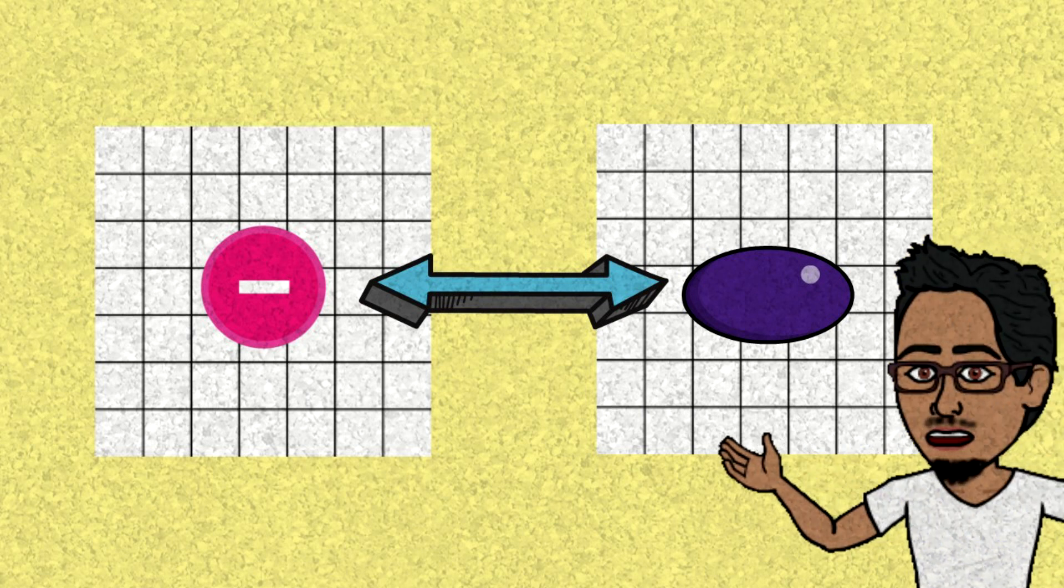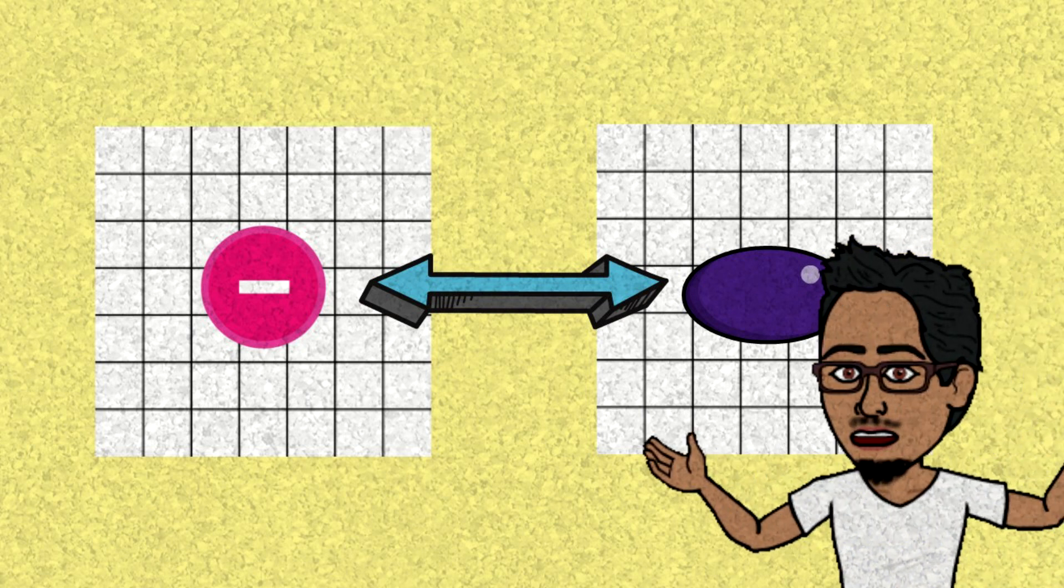The electron field affects the photon field. The photon appears and communicates this force or exchange of repulsion. Once they repel, the photon disappears.